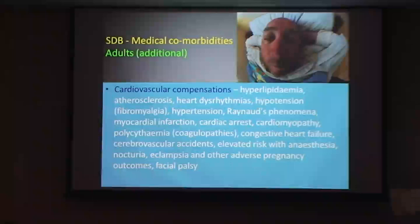With polycythemia, the body recognises it needs more oxygen and responds by making more red blood cells. But what happens? We block up our arteries. And then we have a stroke.